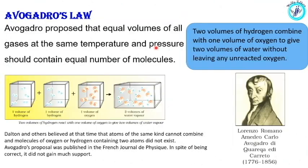Avogadro proposed that equal volumes of all gases at the same temperature and pressure should contain equal number of molecules. Let's take a look at the example of water — H₂O. Two parts of hydrogen and one part of oxygen. Two volumes of hydrogen molecules and one volume of oxygen molecules combine to give two volumes of water vapors. This is Avogadro's law.